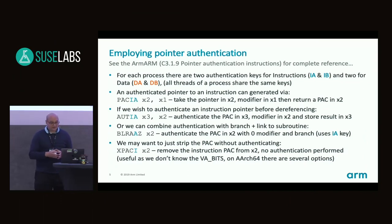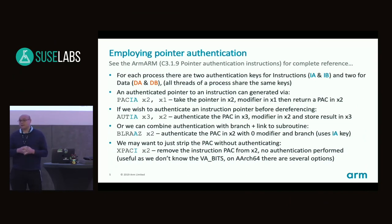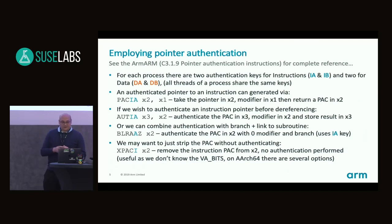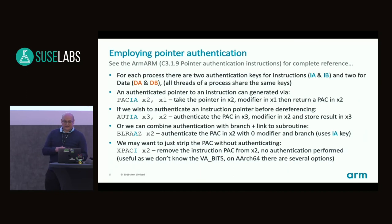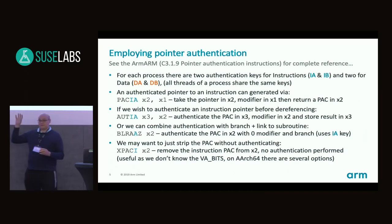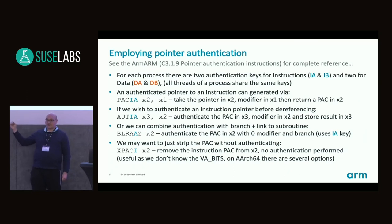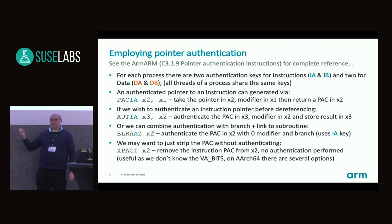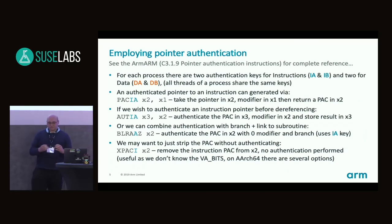Pointer authentication works by having secret keys for pointers to instructions and secret keys for pointers to data. These secret keys are per process and managed by the kernel. A user space process creates an authenticated pointer with an extra instruction - we take a pointer in X2. We're also allowed to supply a cryptographic modifier when we sign something - we have the secret key, the object we wish to sign, and an optional modifier. It behaves like a salt in a password hash, adding variation to the signature. The instruction PAC IA X2 X1 takes a pointer, a modifier, and gives us a signature.